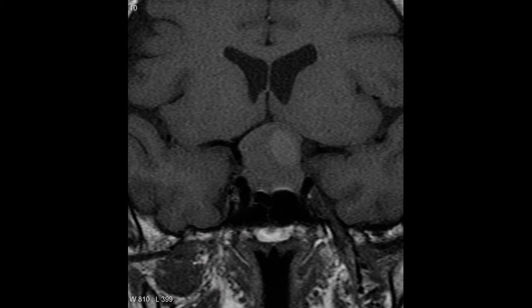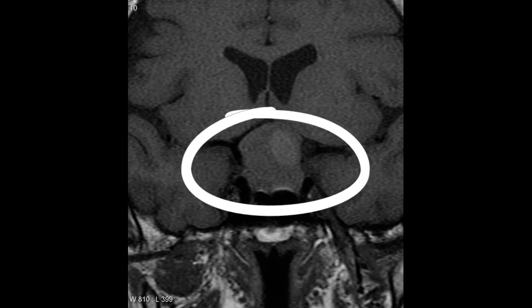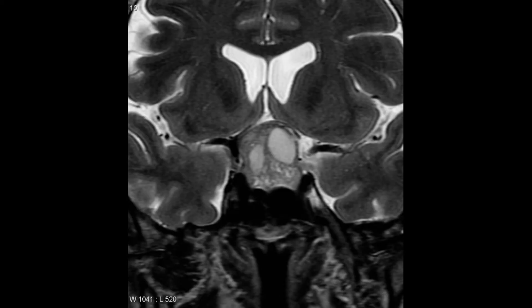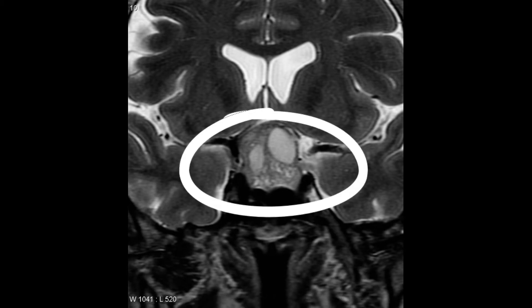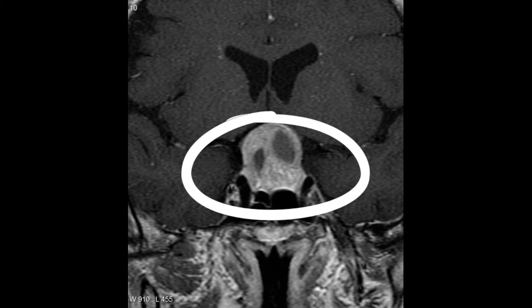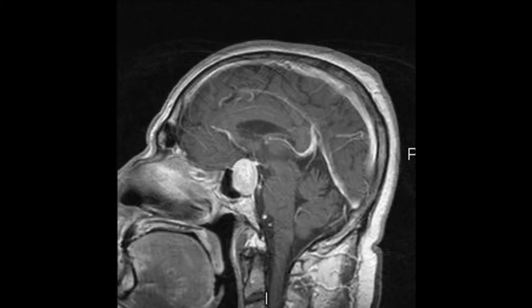Moving on to diagnostics. Here is a T1 coronal section — it's a macro adenoma. This is a T2 coronal section of the same tumour, in the sellar region or slightly suprasellar. This is a T1 plus contrast, and this is a sagittal view, T1 plus contrast. You can see it is invading the sphenoid sinus.